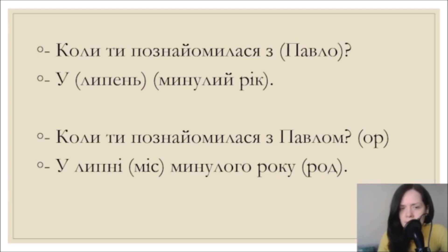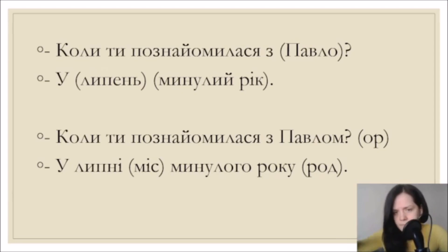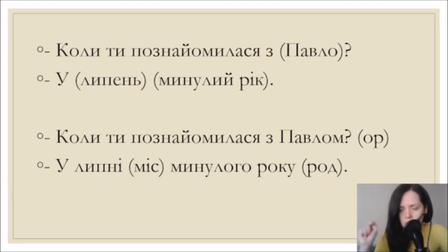У липні - in July, у вересні - in September, у жовтні - in October, у березні - in March. With names of months we use locative case. And минулого року - of last year. Both the adjective минулий and the noun рік go in genitive case because of the 'of' phrase - of last year. So the full correct sentence is: коли ти познайомилася з Павлом у липні минулого року?